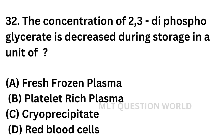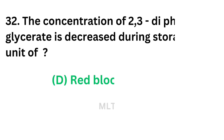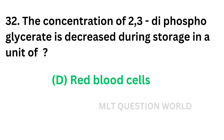Question No. 32. The concentration of 2,3-DPG is decreased during storage in a unit of: Option A: Fresh frozen plasma. Option B: Platelet rich plasma. Option C: Cryoprecipitate. Option D: Red blood cells. The concentration of 2,3-DPG will decrease on the storage of red blood cells. The correct answer is Option D — red blood cells.